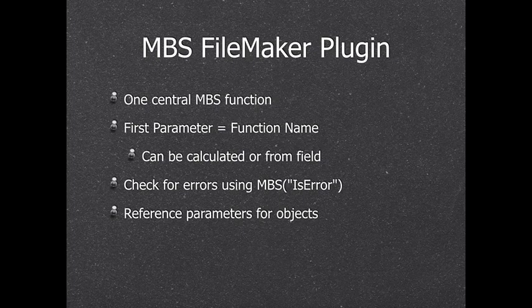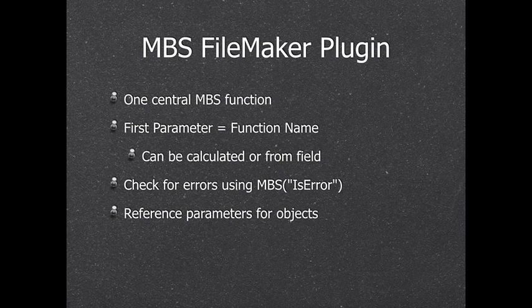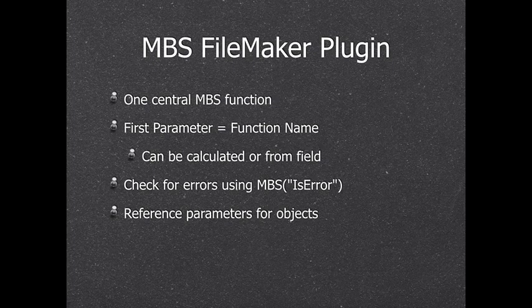Instead of filling the calculation dialog with hundreds — or thousands — of functions, we decided to make one function. The first parameter to the function is the function name you want to call, and this function name can come from a calculation or from a field. Some people write records in a database and loop over them to execute all stored commands, or store effect names in a pop-up menu and use that name as a function.